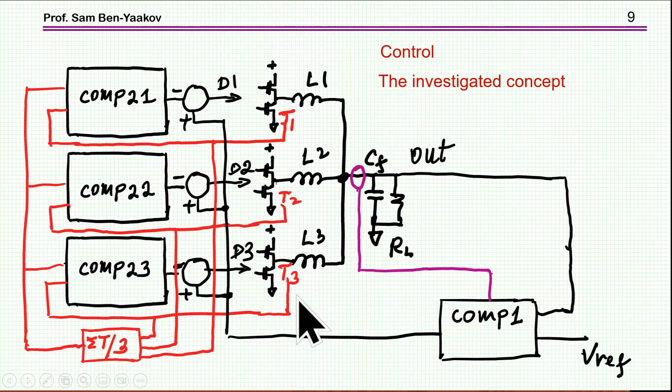Now the control is the classical sharing control in which we have, first of all, a feedback. Say, suppose we like to maintain the output constant, okay? So we have a feedback from the output to a compensator comparing the output to some voltage reference. We may wish to have current feedback because this is a second-order system. It will make life easier in terms of closing the loop and stability, etc.